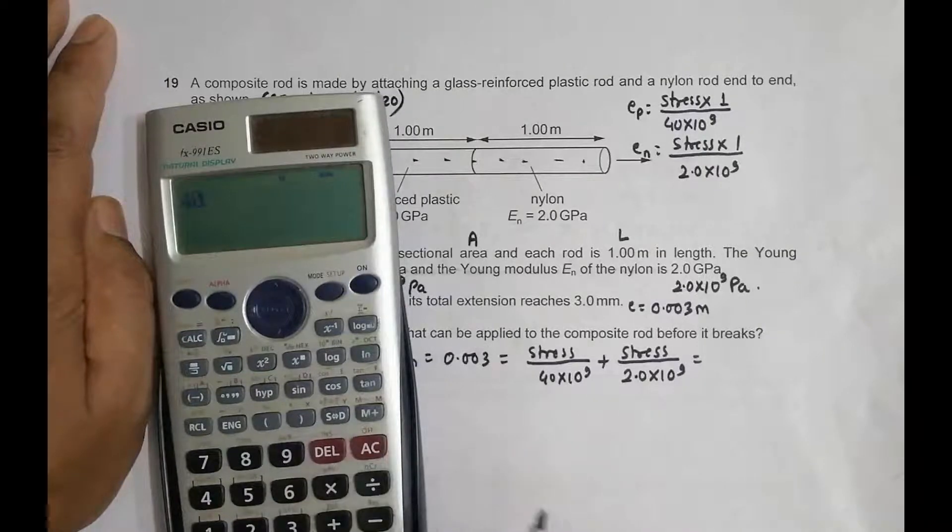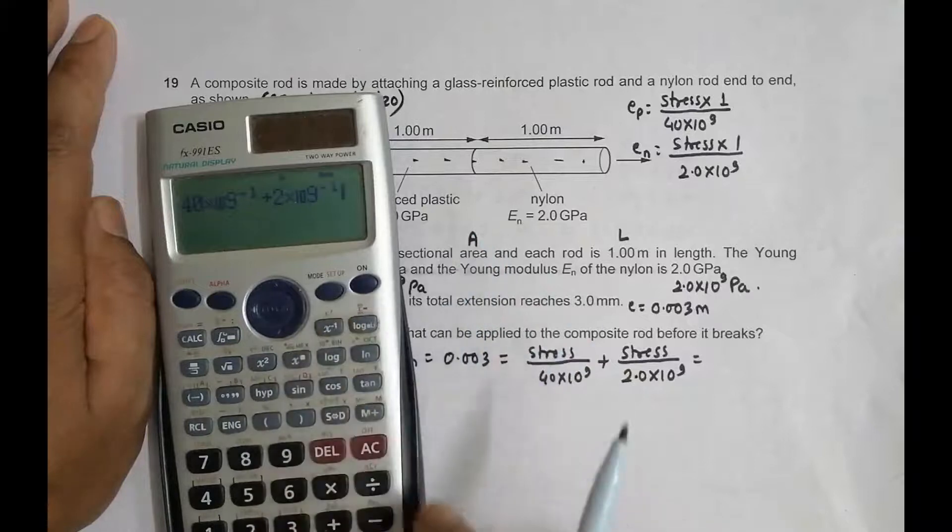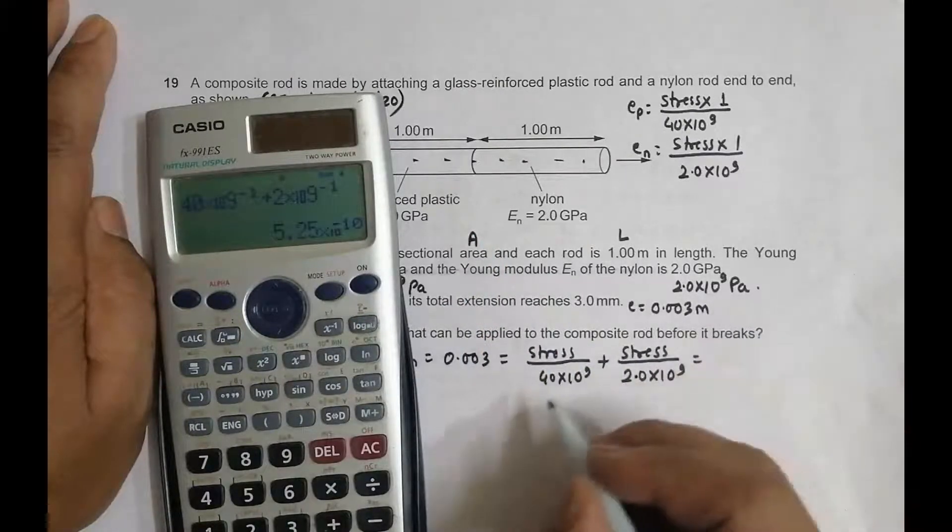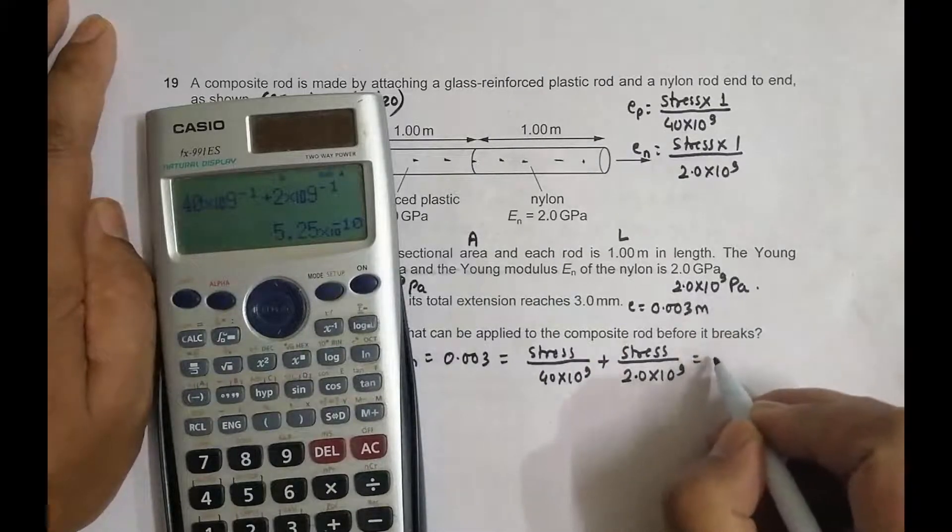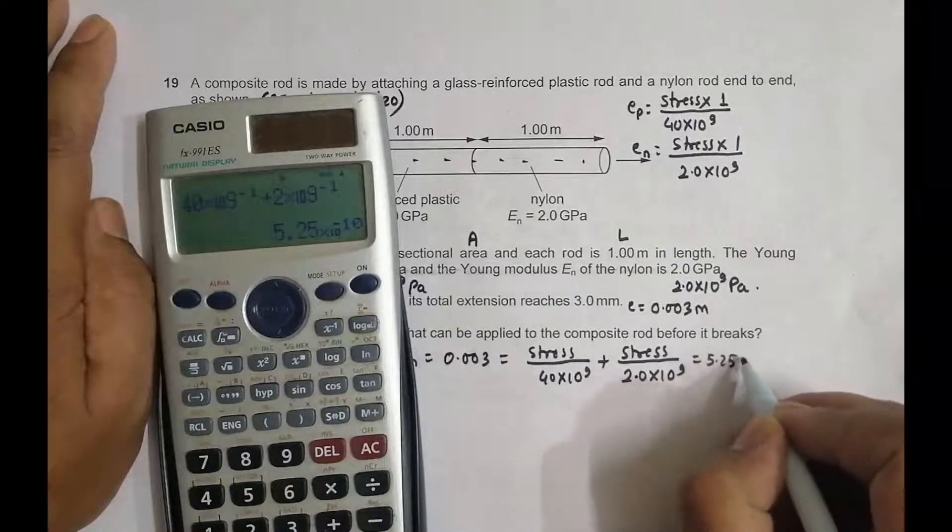Stress is the common factor, so we have stress times (1/(40×10⁹) + 1/(2×10⁹)), which equals 5.25×10⁻¹⁰ times stress.